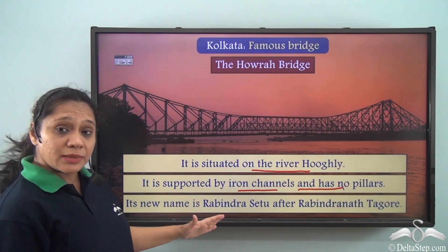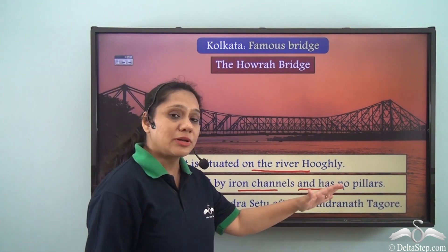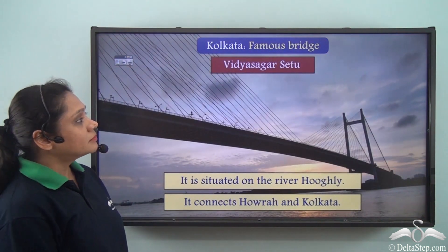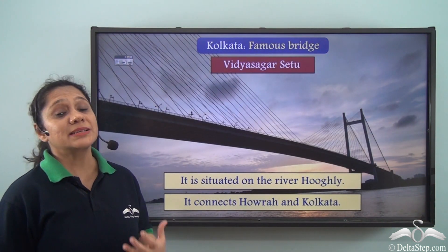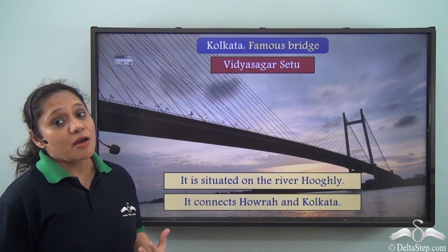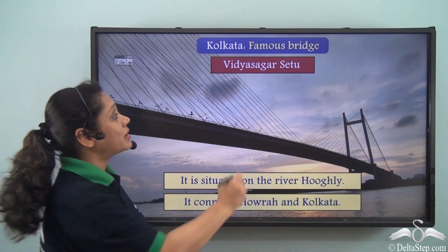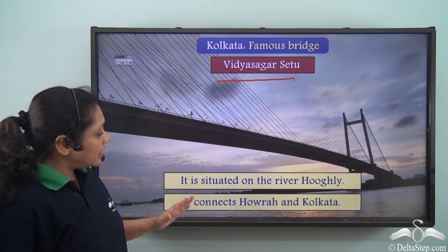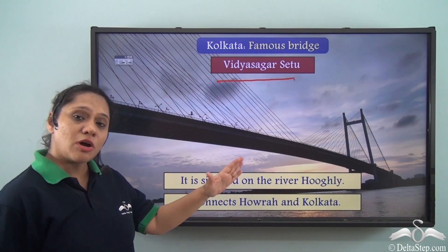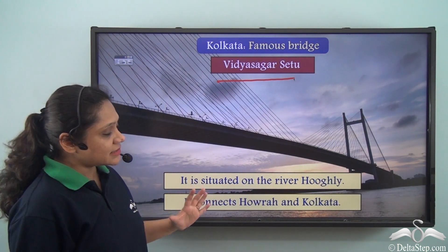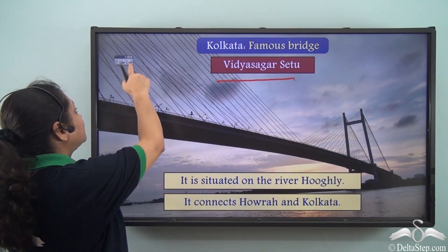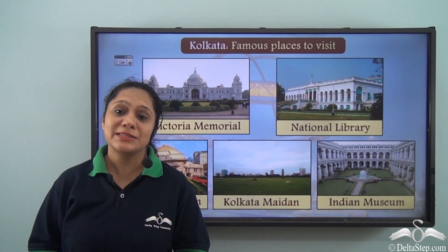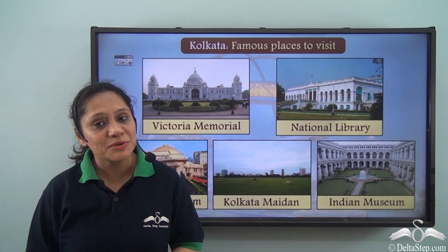The new name of Howrah Bridge is Ravindra Setu, named after Rabindranath Tagore. Kolkata has another iconic bridge known as the Vidyasagar Setu, also situated on the River Hooghly, connecting Howrah and Kolkata.